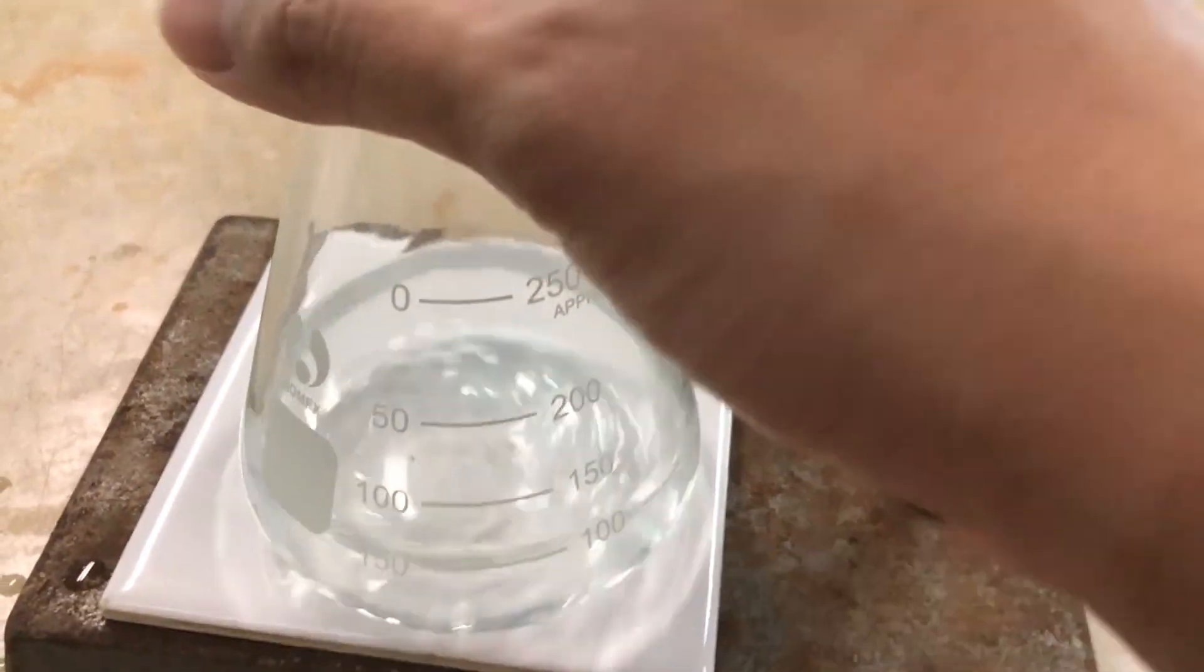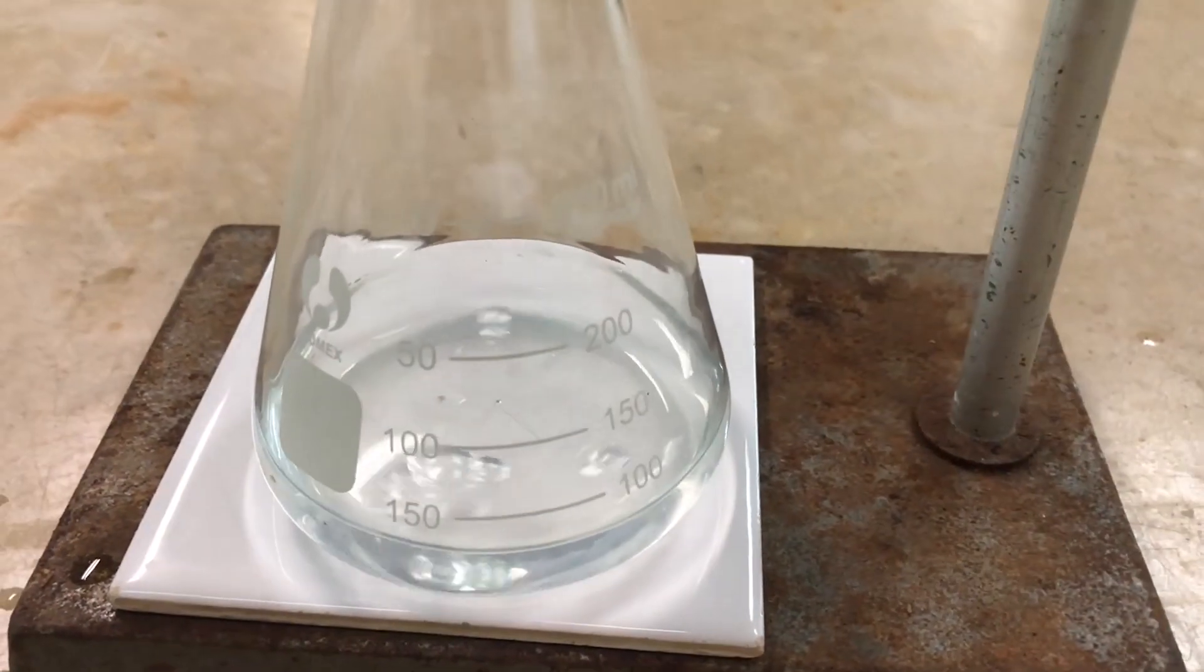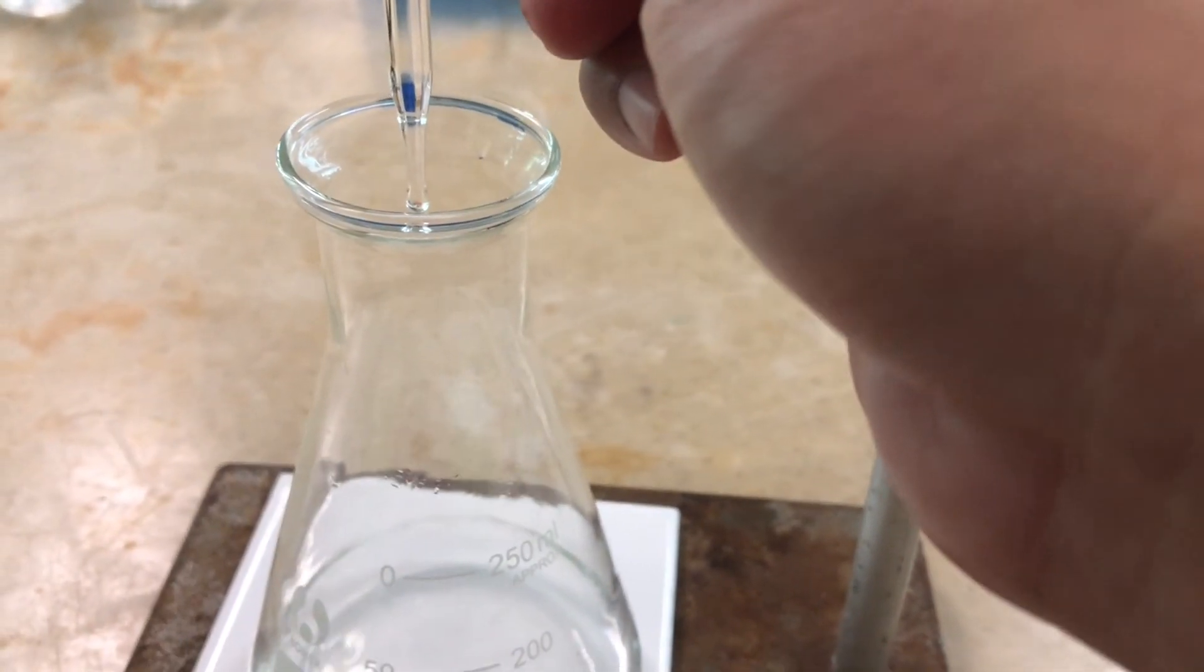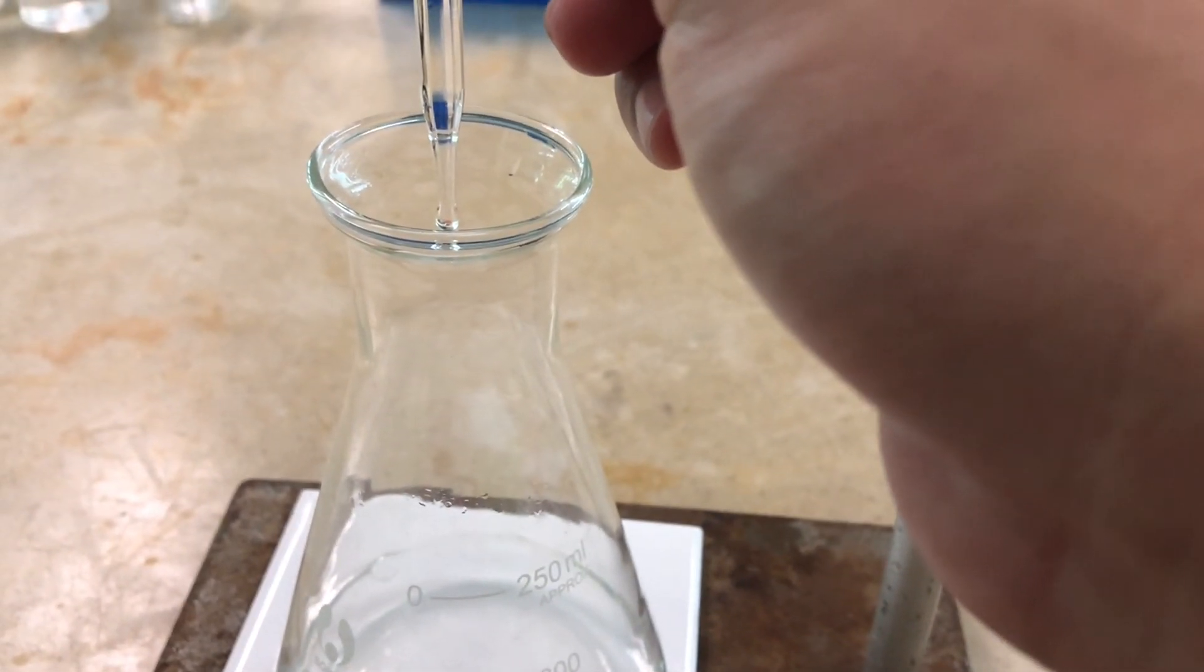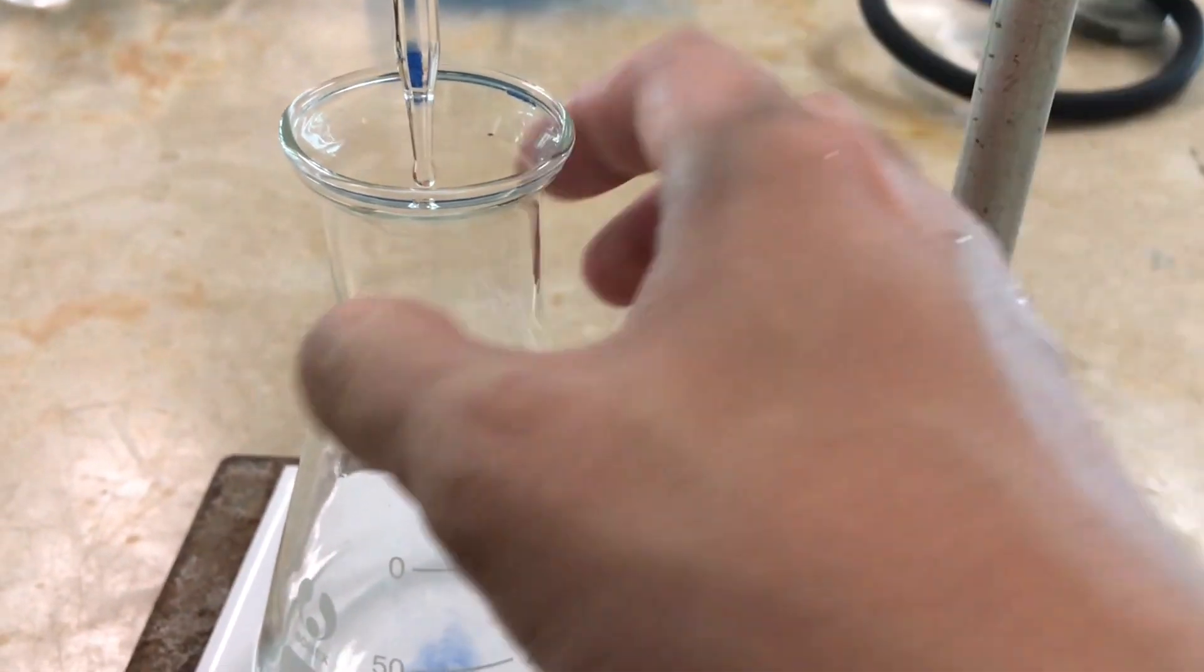Take special note to add in only a drop at each time, turning off the tap, swirling it to allow the color change to happen. Have a bit of patience, make sure that you only add in one drop at each time, and you'll realize that the color change will happen immediately once you've added in the correct volume of titrant.